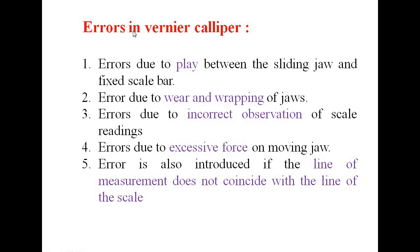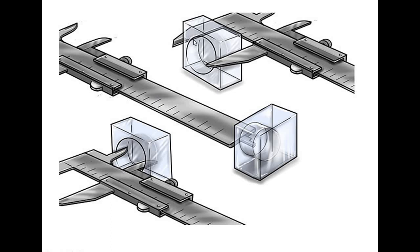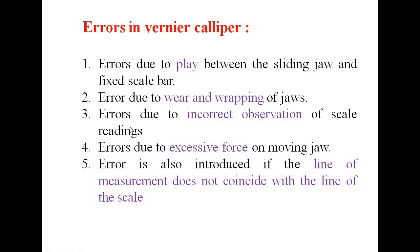What are the errors in vernier calipers? Errors due to play between the sliding jaw and the fixed scale bar occur when there is play between the two jaws. Errors due to wear and warping of jaws — if the jaws are worn, error will definitely occur. Errors due to incorrect observation of scale reading. Errors due to excessive force applied on the moving jaw. Error also results if the line of measurement does not coincide with the line of the scale.